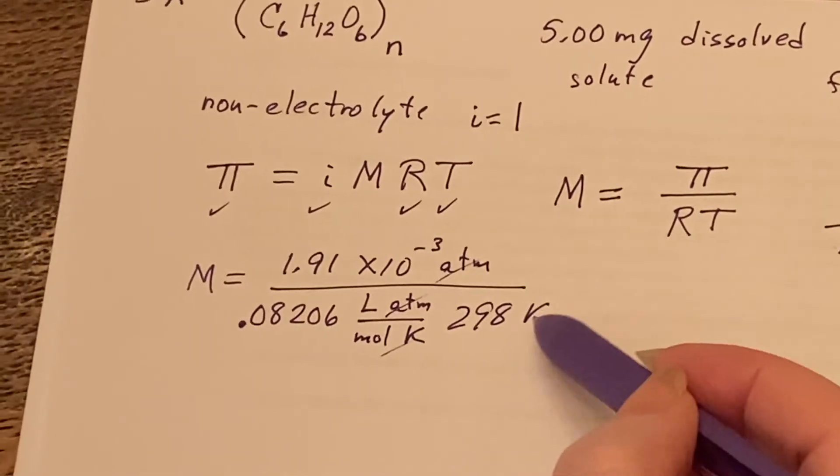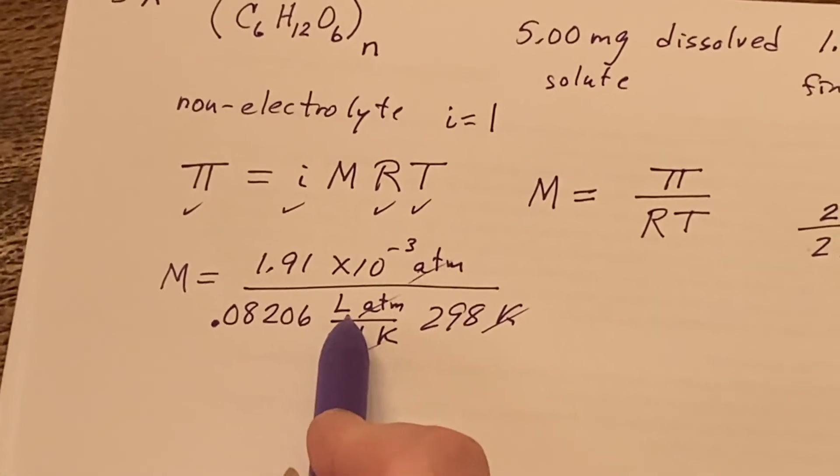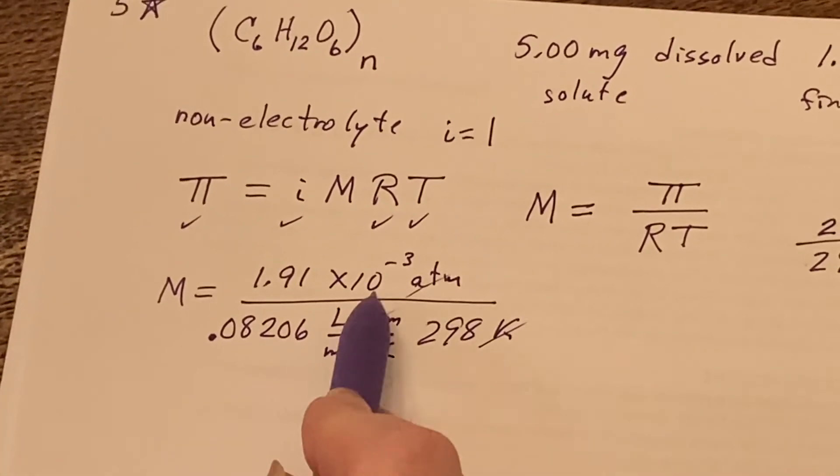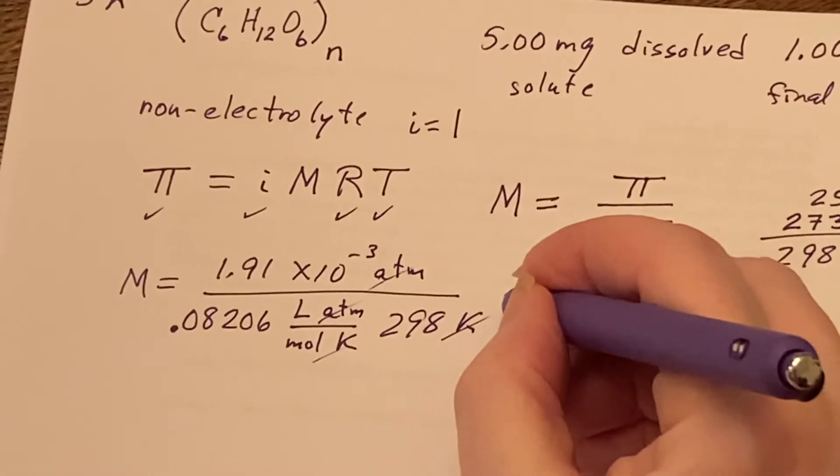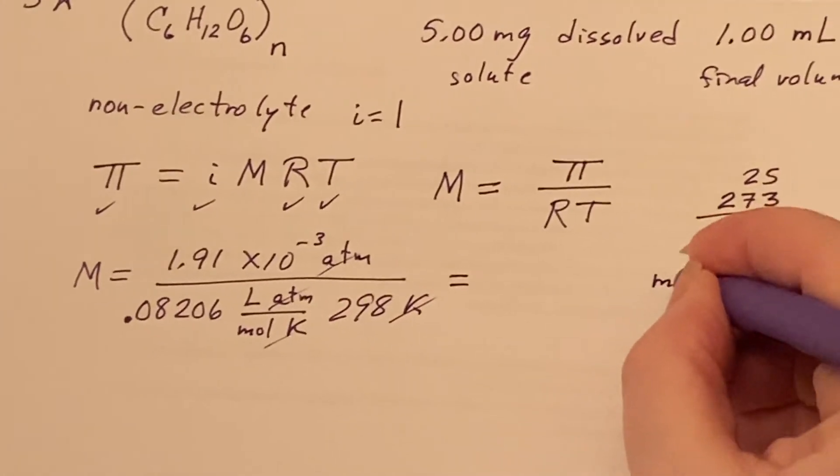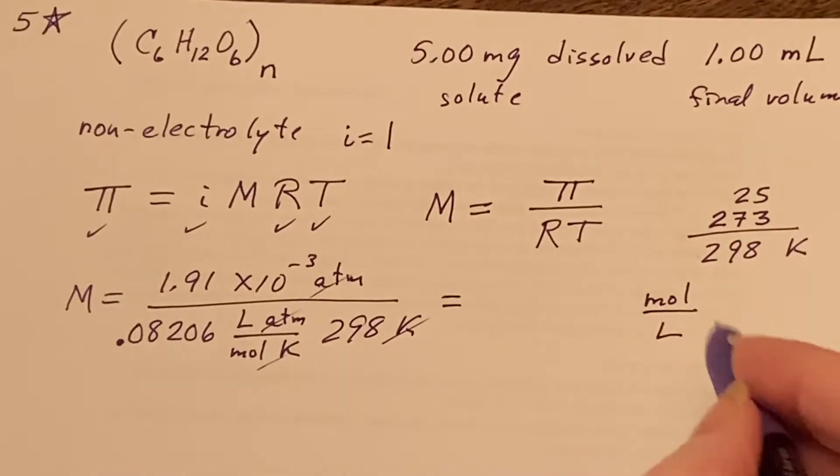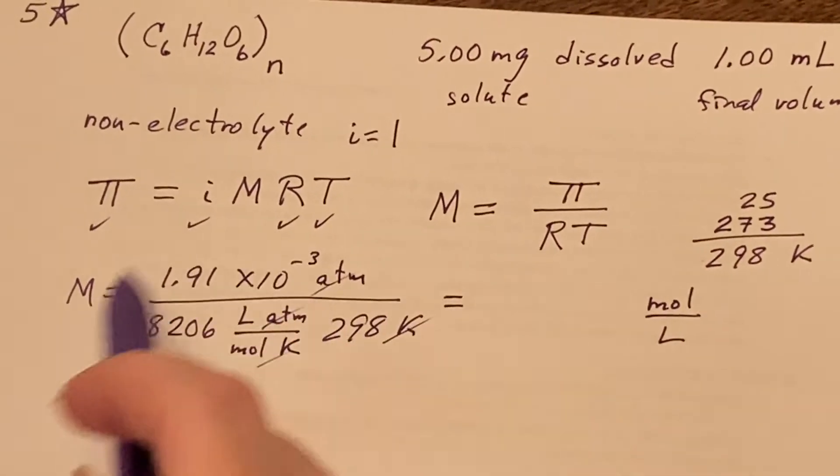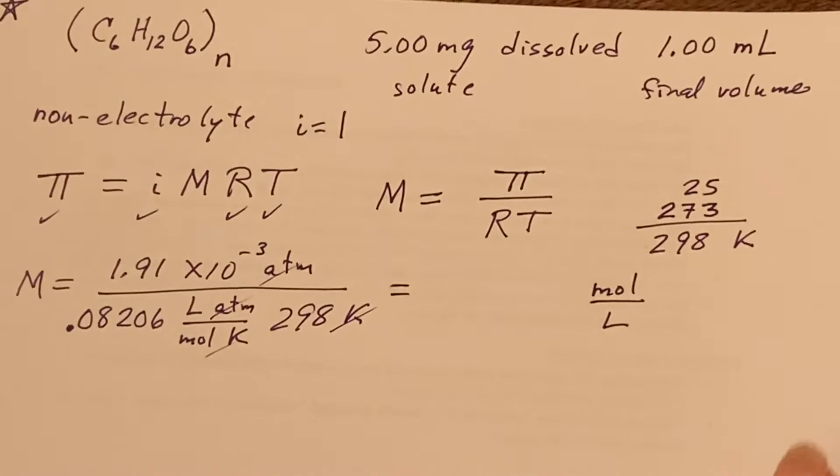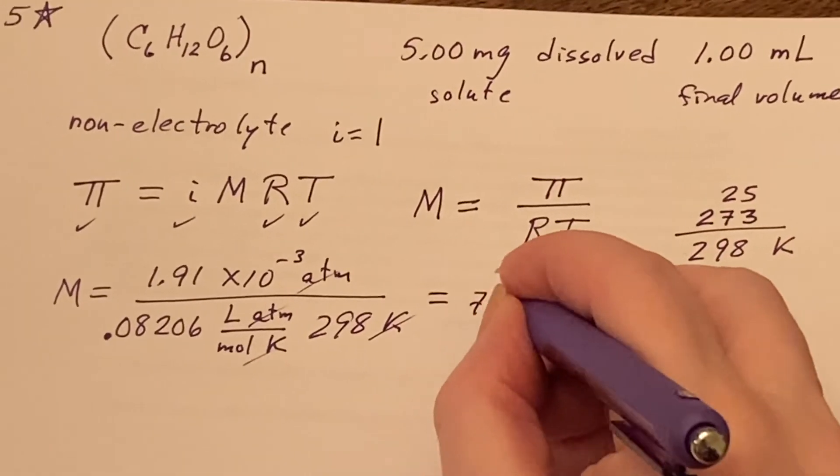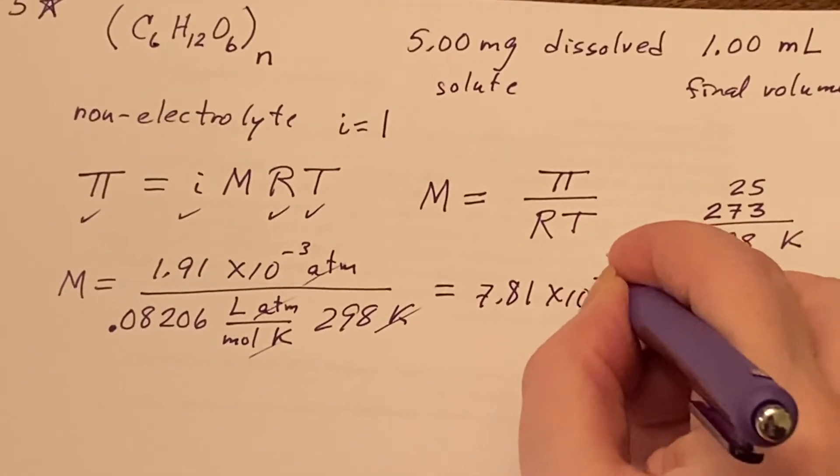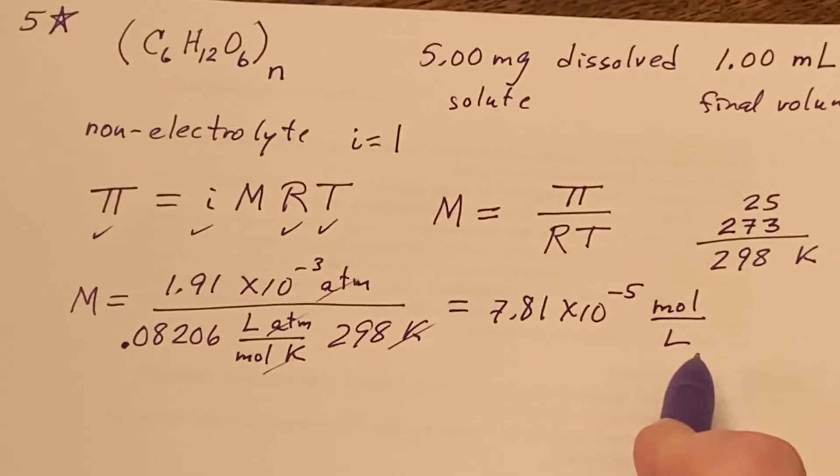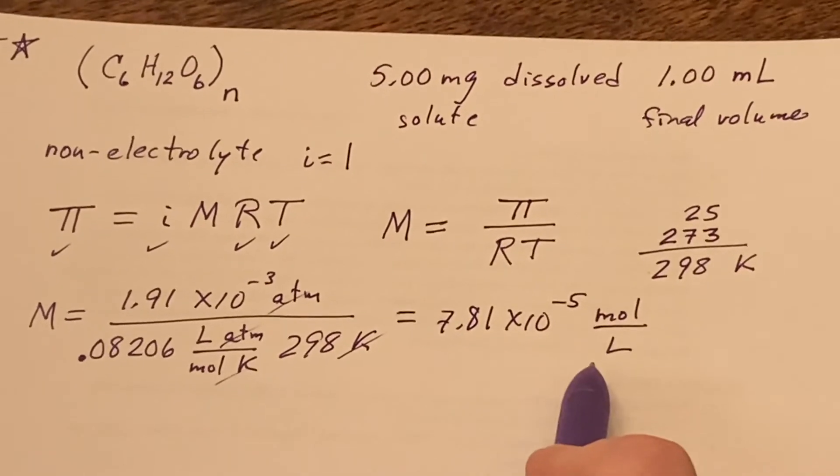And here I need R - 0.08206 liter atmospheres over moles and kelvin. So you can see the atmospheres are going to disappear, the kelvin is going to disappear. This mole is under two division signs, so it ends up getting flipped to the top, so I'll have moles per liter. That's a molarity. Run this through the calculator and you're going to get 7.81 × 10^-5 moles per liter. So that we know is a concentration.